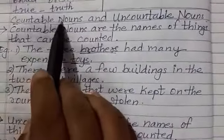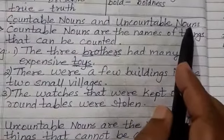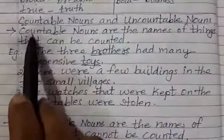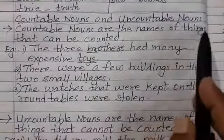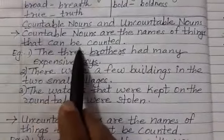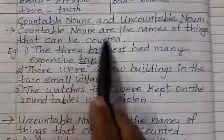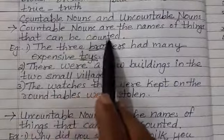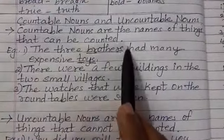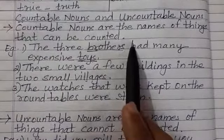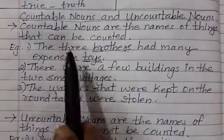Now we will learn countable nouns and uncountable nouns. Countable nouns are the names of things that can be counted. The noun which can be counted, we call a countable noun.